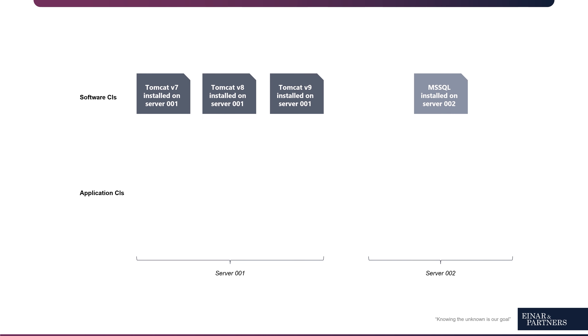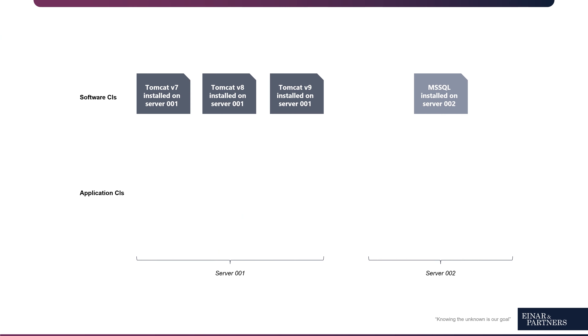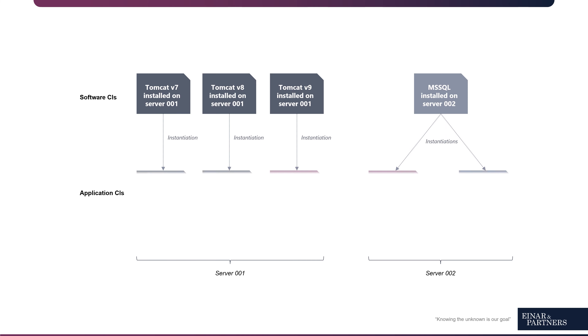Software CIs typically represent the software that is actually installed on our device. So, for example, on a web server that we are using for our intranet application, we might have three versions of Tomcat installed — just for the sake of the argument. We can use software asset management to inventorize this. However, it does not really tell us which one of these Tomcat installations is now used in our application service. Therefore, we have application CIs.